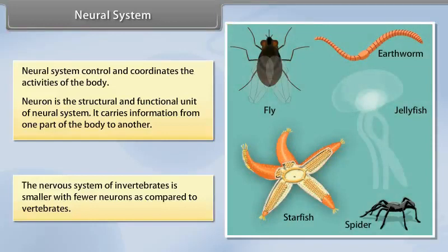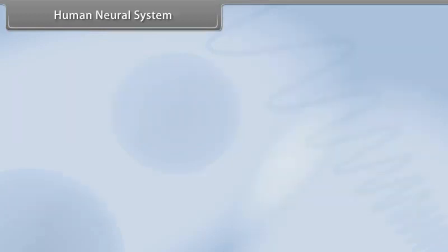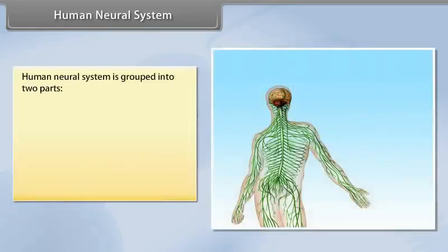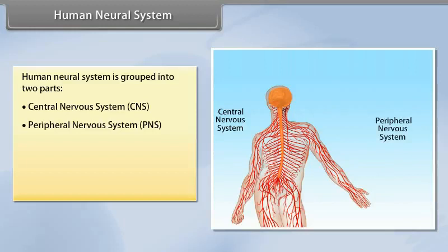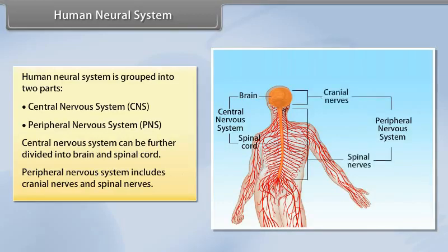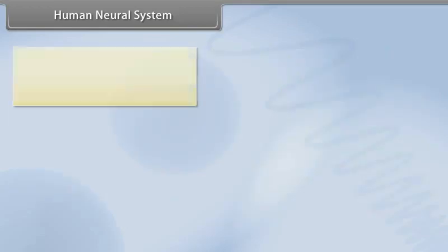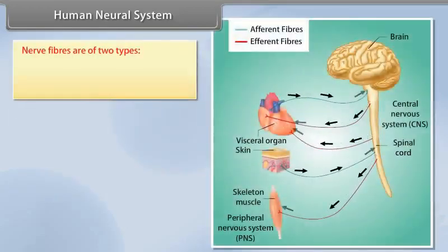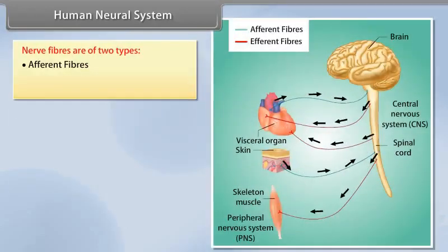Human neural system is grouped into two parts: central nervous system and peripheral nervous system. Central nervous system can be further divided into brain and spinal cord. Peripheral nervous system includes cranial nerves and spinal nerves.